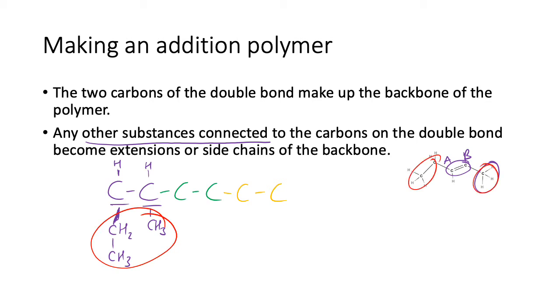Any other substances connected to the carbons on the double bond become extensions or side chains of the backbone. So this next carbon here, that's a 2-pentene, has the same thing: an ethyl group and a methyl group with two hydrogens over here, and this one here two hydrogens and a methyl and an ethyl group.